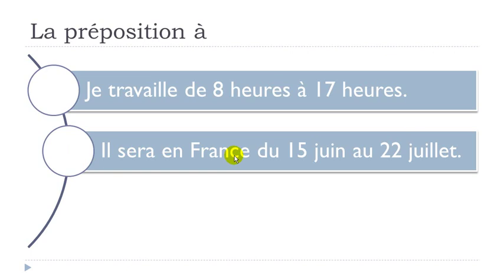Il sera en France du 15 juin au 22 juillet. Here 'sera' is the future of 'to be'. You've got 'du' — which combines 'de' and 'le' as we saw in a previous lesson — then the date, and 'au' combines À and 'le'. So whether it's 'à 17h', 'au 22 juillet', or 'à Paris', the concept is this 'to', combined with 'de', giving the from-to structure.